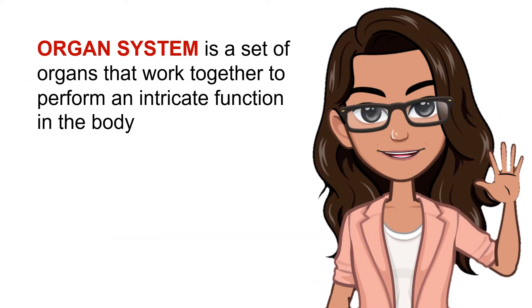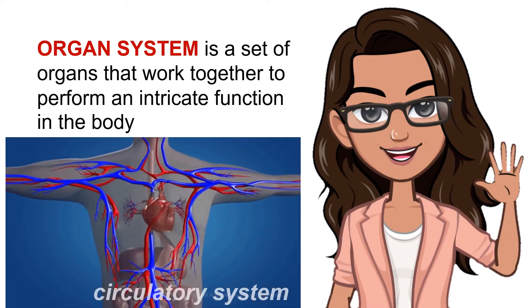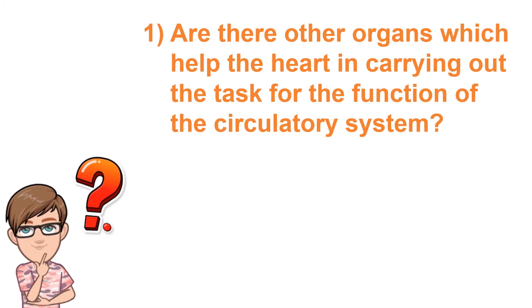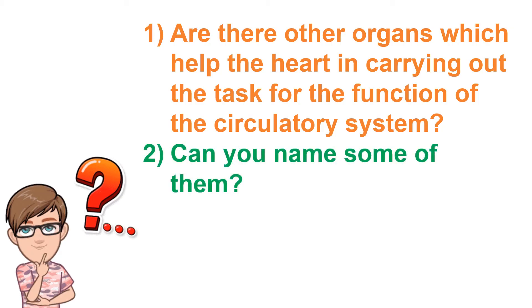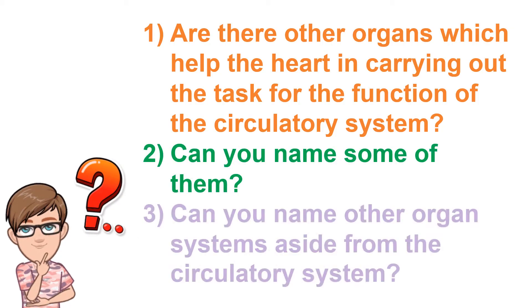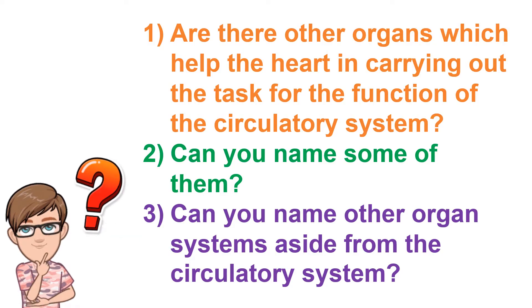An organ system is a set of organs that work together to perform an intricate function in the body. The heart, for example, is the main organ of the circulatory system. Are there other organs which help the heart in carrying out the function of the circulatory system? Can you name some of them? Can you name other organ systems aside from the circulatory system? In more advanced animals, these are the organ systems.